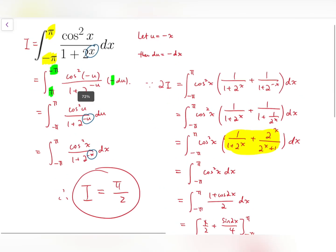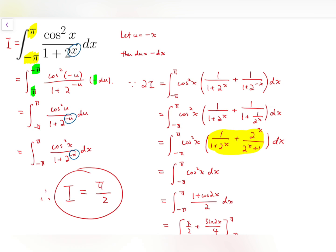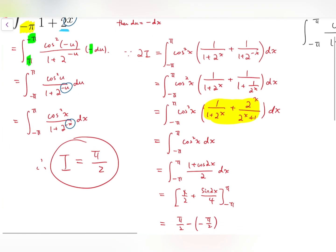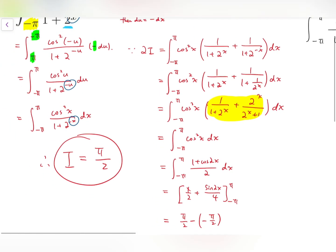Just one interesting remark, which is that if we try to change this number, the base 2, into any positive number, I can say that for any positive number a, integrating from minus pi to pi of the function cos squared x over 1 plus a to the power x, I can follow the exact same argument by rewriting into cos squared x over 1 plus a to the power minus x.